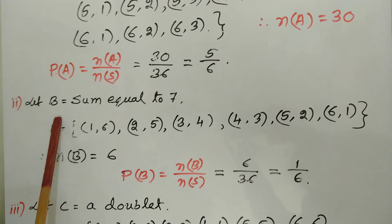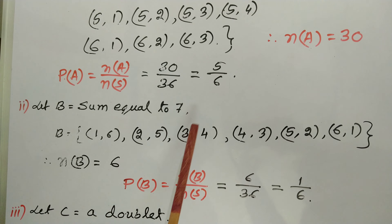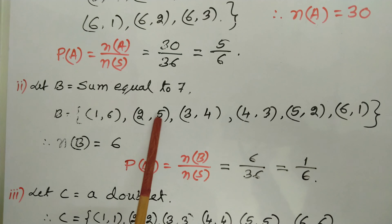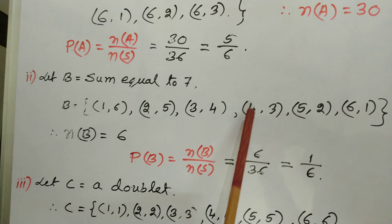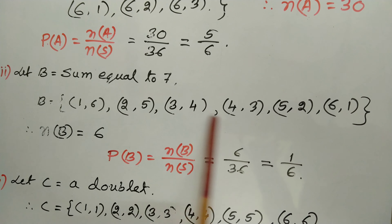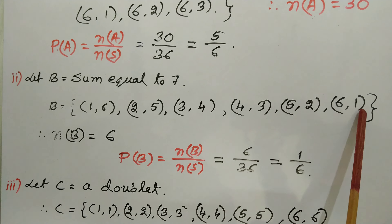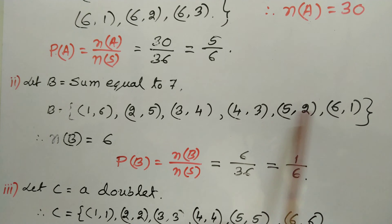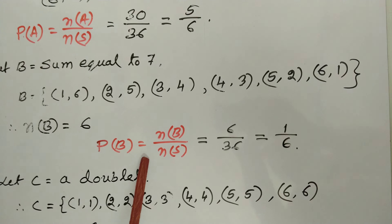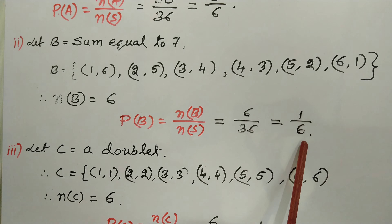Second: let B be the event — sum equal to 7. We take only outcomes where the sum is exactly 7: (1,6), (2,5), (3,4), (4,3), (5,2), (6,1). These each give sum 7. Therefore n(B) = 6. Probability of B = n(B)/n(S) = 6 by 36 = 1 by 6.